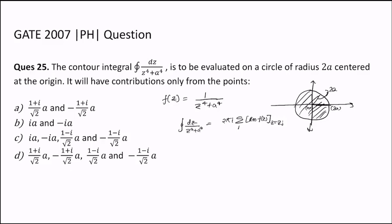Basically they're asking which points will contribute — that is, they're asking for the poles which are within this circle of radius 2a. In order to find the poles, we equate the denominator to zero: z to the power 4 equals minus a to the power 4, which we can write as a to the power 4 times (cos(2n+1)π + i·sin(2n+1)π).